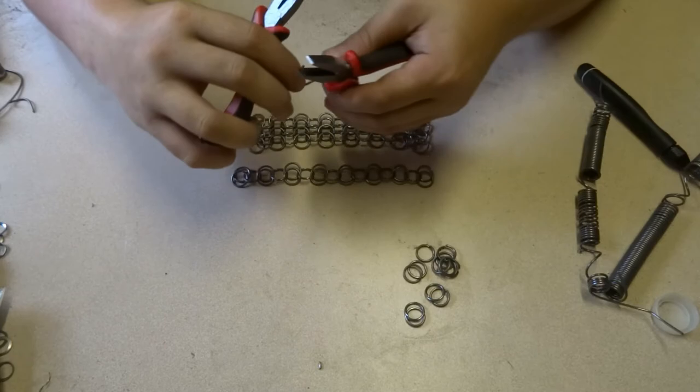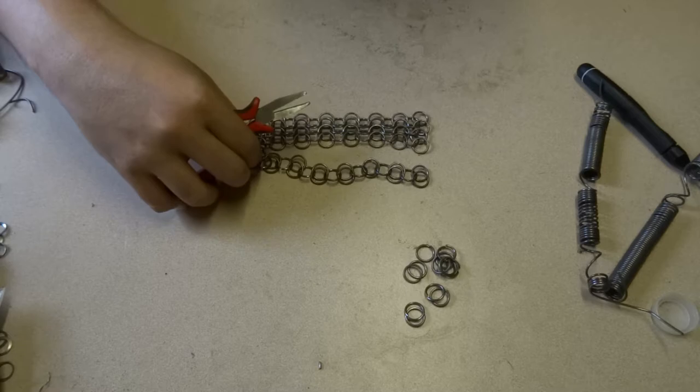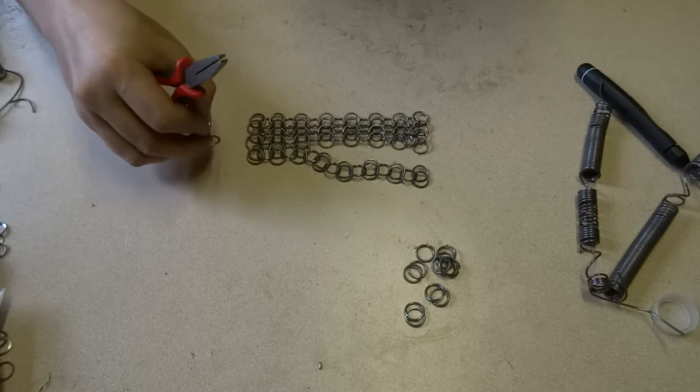To knit the chains together, you bend a ring wide open, and then weave it through the gap between the chains. It should go down through the bottom ring of the top chain, and the top ring of the bottom chain under it.